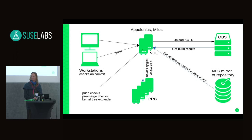One thing that would be really nice for branch maintainers — or not only branch maintainers — would be some way to check how many pull requests are waiting for the build hosts, to get some idea of how long you'll have to wait. Sometimes you can wait an hour or more when it's quite busy.